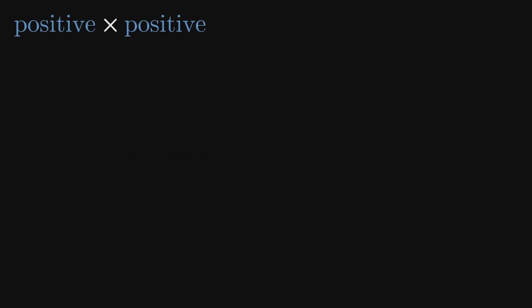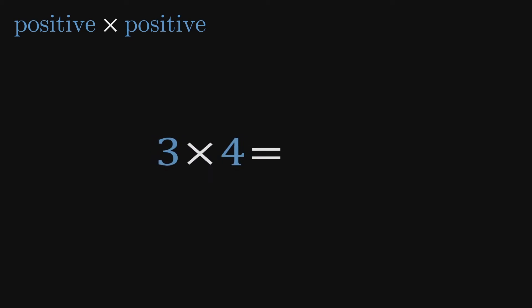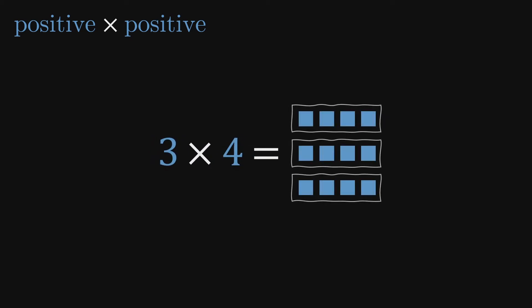There's no mystery involved when multiplying two positive numbers. For example, 3 times 4 is simply three groups of 4, which is 12.